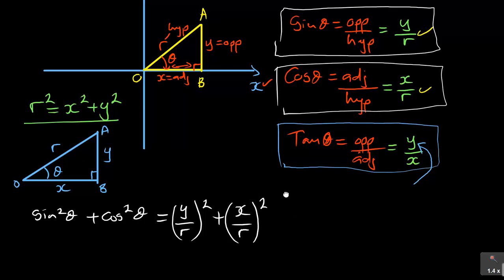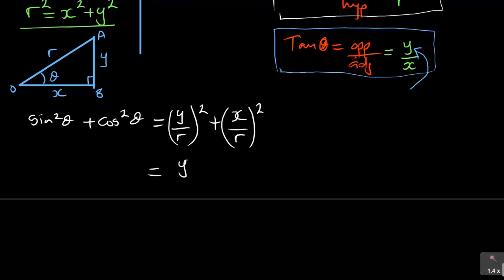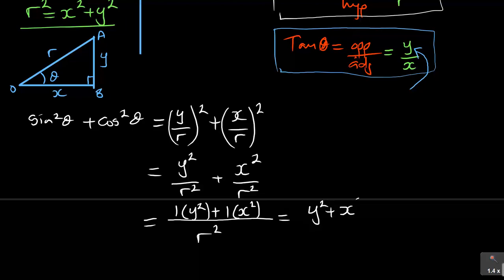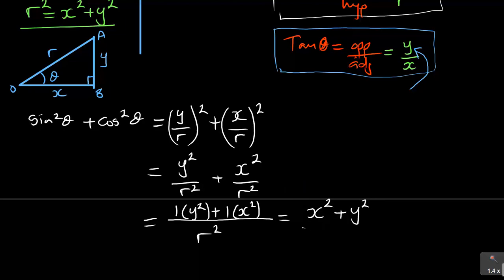If you simplify that, it equals Y² over R² plus X² over R². The common denominator is R², so you have R² as denominator, giving Y² plus X² over R². Rearranging in alphabetical order, this is X² plus Y² over R².